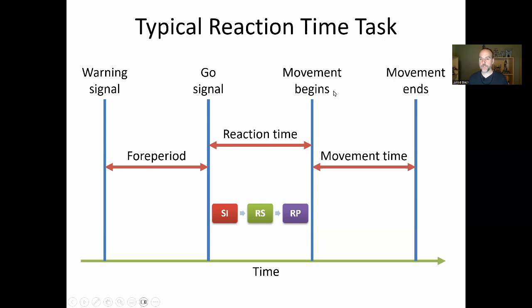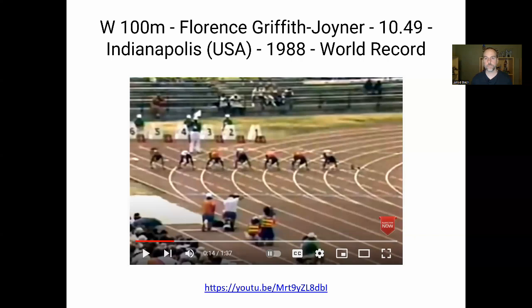Let's give this a better example with a sprint start in a 100-meter race. We'll look at Flo-Jo — Florence Griffith Joyner — still the record holder in the women's 100 meters with a time of 10.49, set back in 1988. As you watch the clip, think about: what is the warning signal, what is the go signal, when does movement begin, and when does movement end?